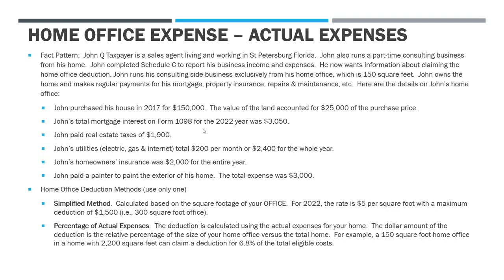The mortgage interest John paid for the year was $3,050. He paid property taxes of $1,900. His utilities — electric, gas, and internet — were $200 per month, or $2,400 for the whole year. His homeowner's insurance premiums were $2,000 for the year, and he did some repairs: he painted the entire exterior of the home for $3,000. We're going to use the actual expenses method rather than the simplified method, which is just the square footage times a fixed rate of $5 per square foot for 2022.